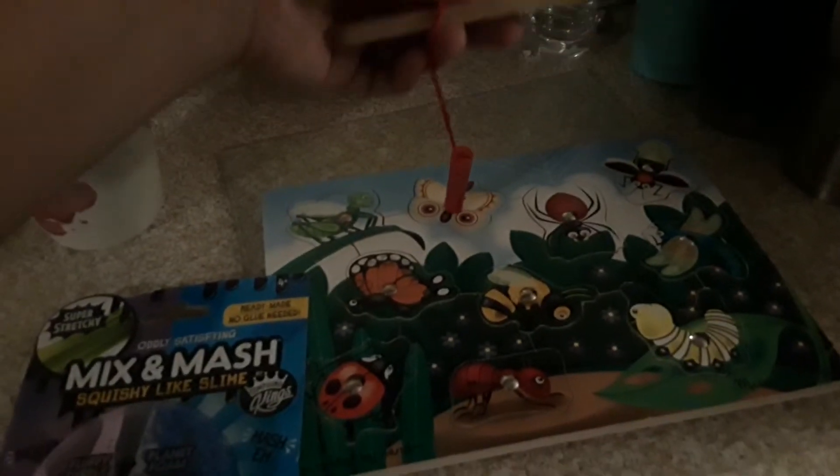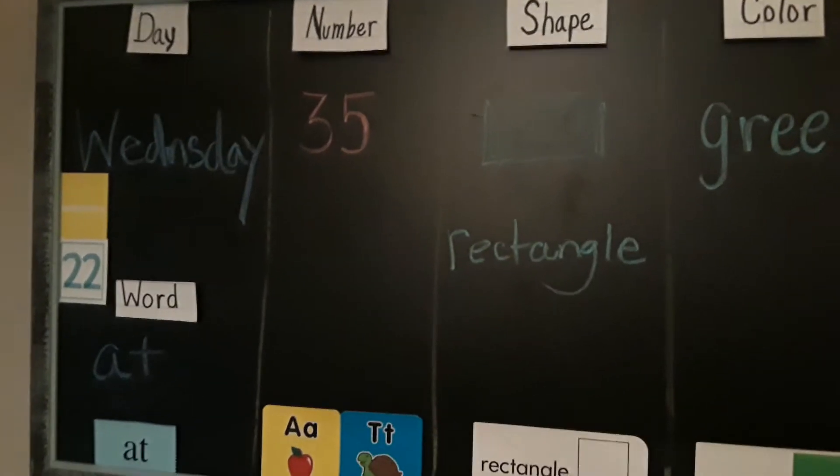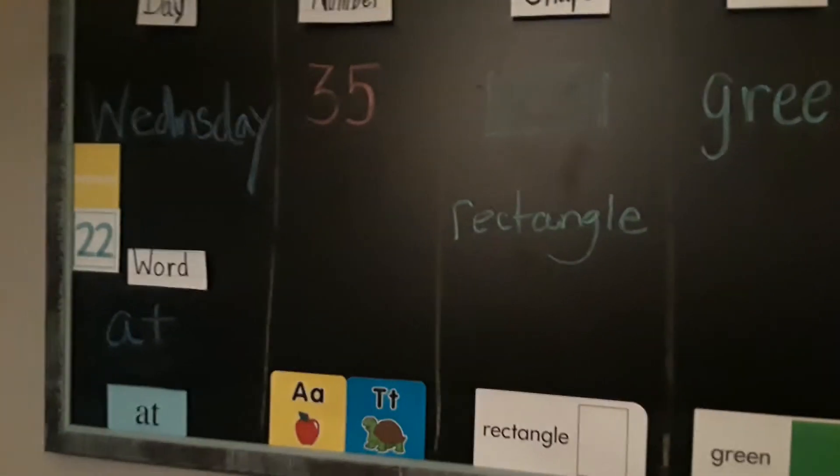We're going to use the magnets here with his little net to pull these up and give him some more sensory. Over here I have his daily board up with his day of the week, his number, his shape, his color.